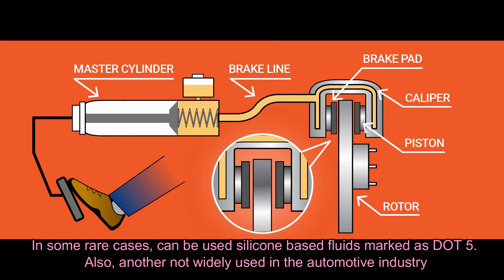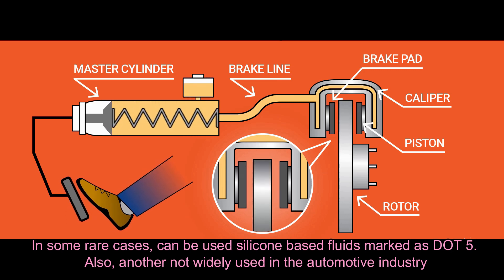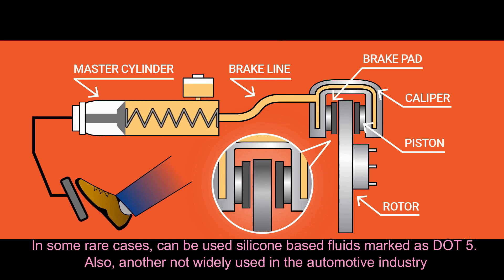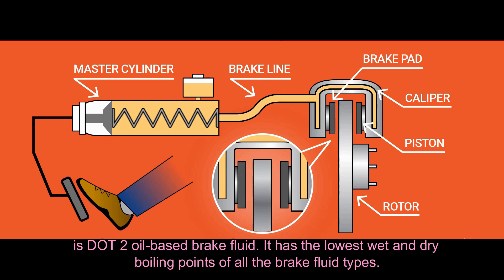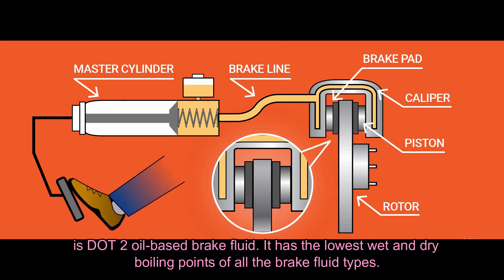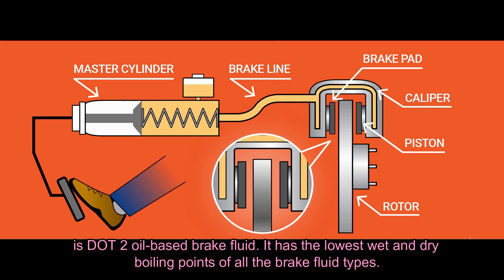In some rare cases, silicone-based fluids marked as DOT5 can be used. Also, another not widely used type in the automotive industry is DOT2, an oil-based brake fluid. It has the lowest wet and dry boiling points of all the brake fluid types.